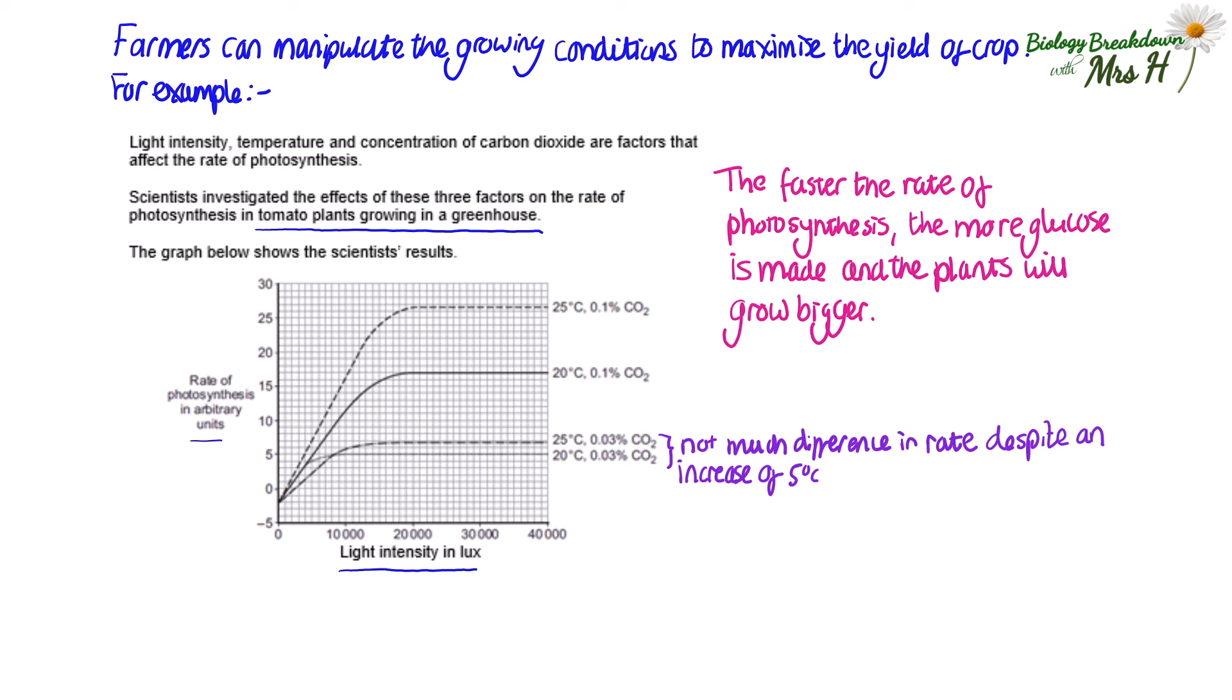And the increase in temperature at 0.1% carbon dioxide concentration makes a much bigger impact than at lower concentrations. So looking at these results, the farmer might like to maintain his greenhouse at 25 degrees C and 0.1% carbon dioxide concentration to get the maximum rate of photosynthesis, therefore the greatest tomato plant yield. Or they may be happy with the yield at 20 degrees C because it's still a good rate of photosynthesis at 0.1% carbon dioxide concentration. And if they do it at 20 degrees C, then they actually save some money on heating costs, but still get a good yield. So there are different ways you can answer this question.